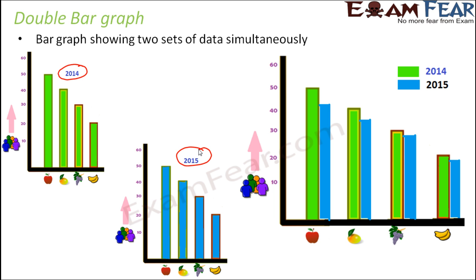So that is where we make use of double bar graphs and the double bar graph looks somewhat like this. Here also we draw the same X, Y axis, but here you see, instead of just one bar, you have two bars. One bar, all those bars which are represented in green, they represent 2014 and all those represented in blue represent 2015.